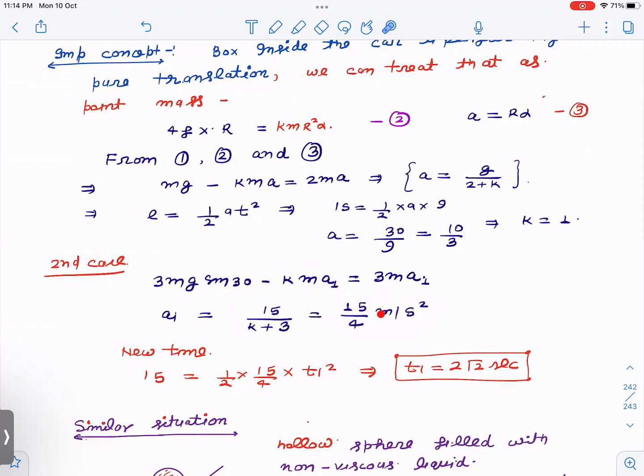The new acceleration a1 you get - k is 1 so the acceleration is this - and now to find the time to travel the same distance: the distance is 15, acceleration is this, you get t as 2 root 2 seconds. So that's the answer. I hope you have understood this concept - it's a very important concept for JEE Advanced. Let us now see one similar situation.